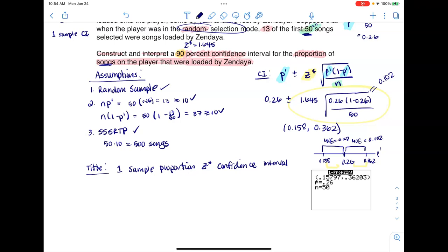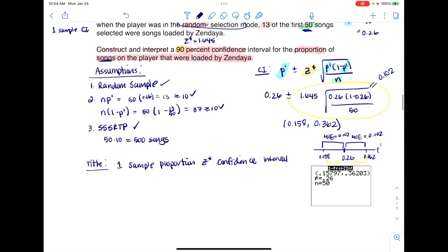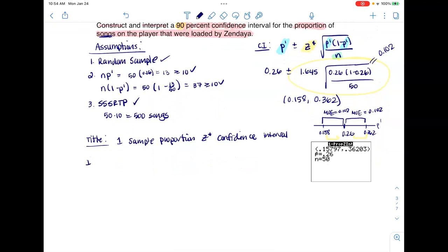If we wanted to find out what that distance is, you have three ways you could do it. You could actually crunch this number on your calculator, or I think the easier way is just to subtract these two numbers. So if I had 0.362 minus 0.26, it looks like my margin of error is about 10%. This should be about 0.102 on this side also, because the margin of error is the same number.